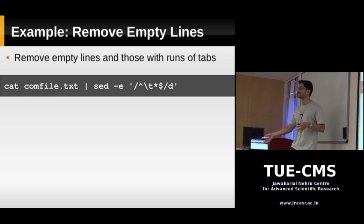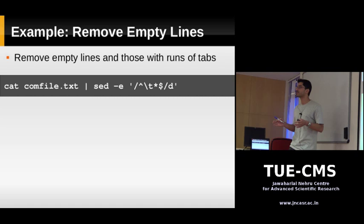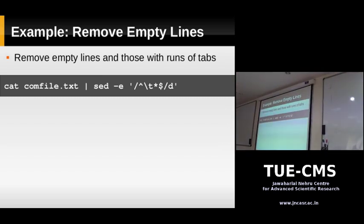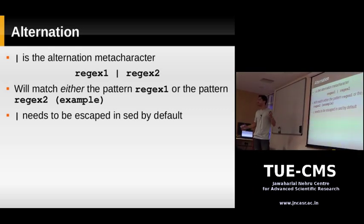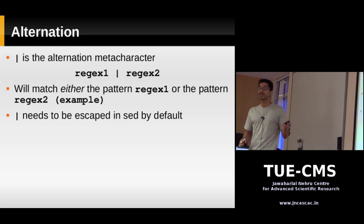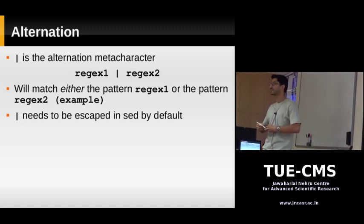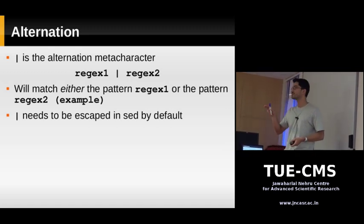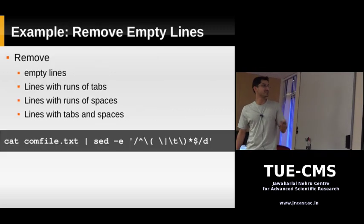But suppose you have a line with a combination of tabs and spaces — like five tabs and five spaces. Now we're going to use a feature of regular expressions called alternation. We use the bar character. The bar is the alternation metacharacter. If you have a pattern on each side, it says match this or this — any one of them. If it doesn't find the first, it looks for the second. The pipe symbol also needs to be escaped with a backslash, just like the plus.